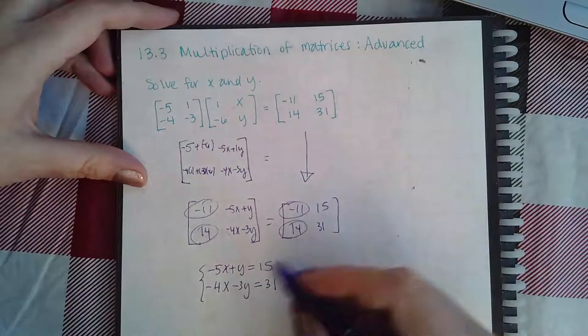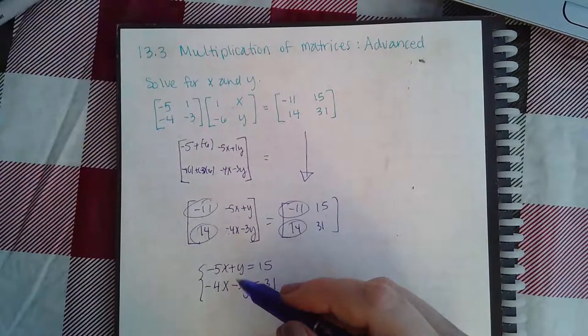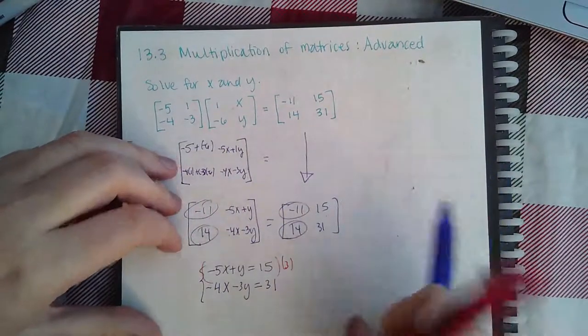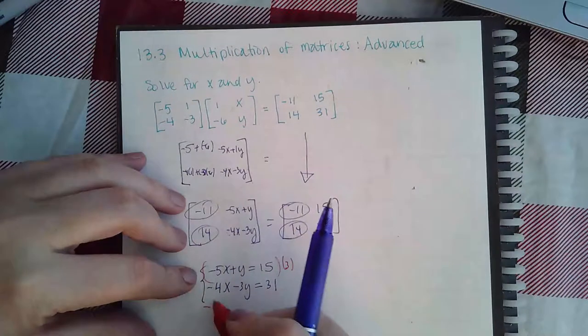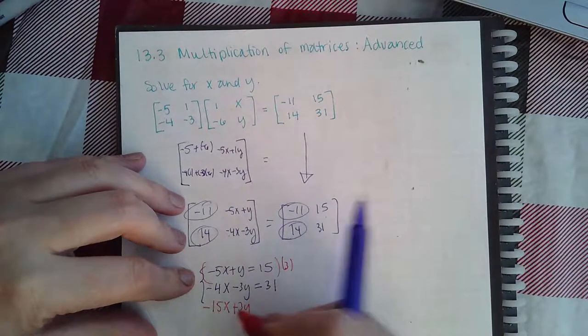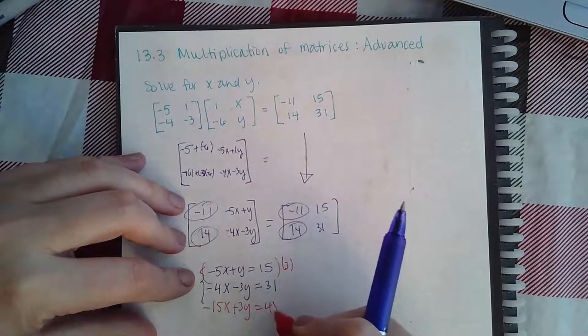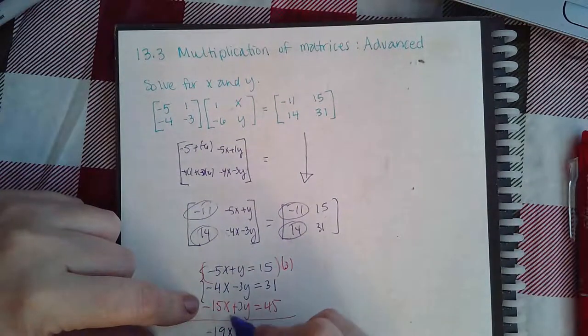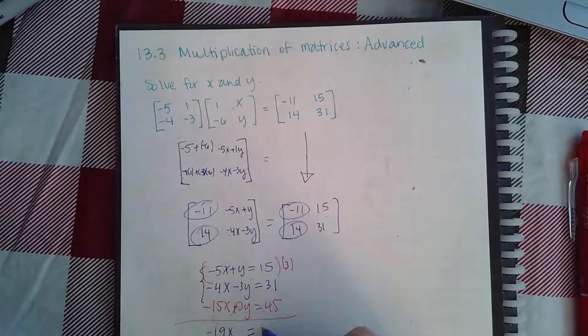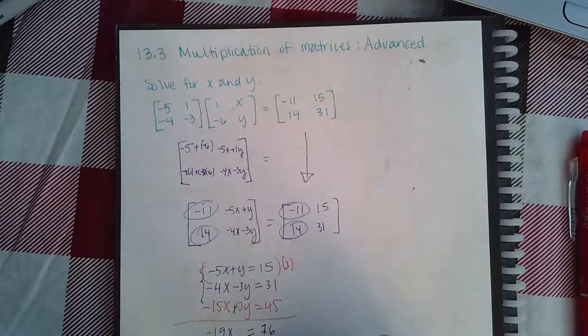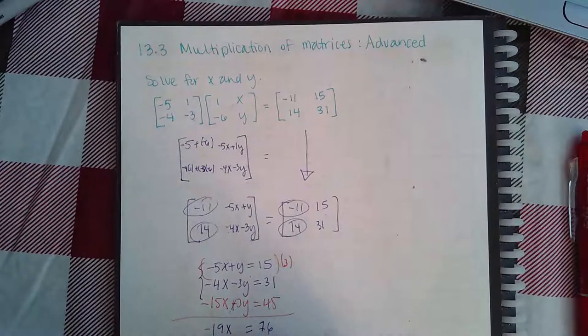So then I can multiply the top equation by 3 using the elimination method and I'll get negative 15x plus 3y equal to 45. And then this will give me negative 19x, these will cancel, I'll get 76. And then if I divide both sides by negative 19...